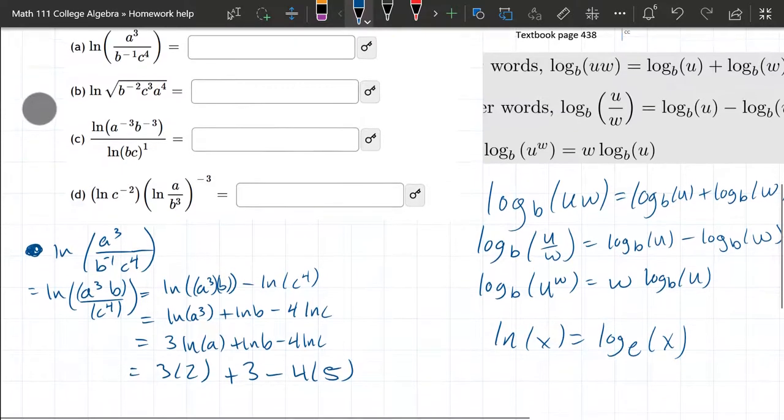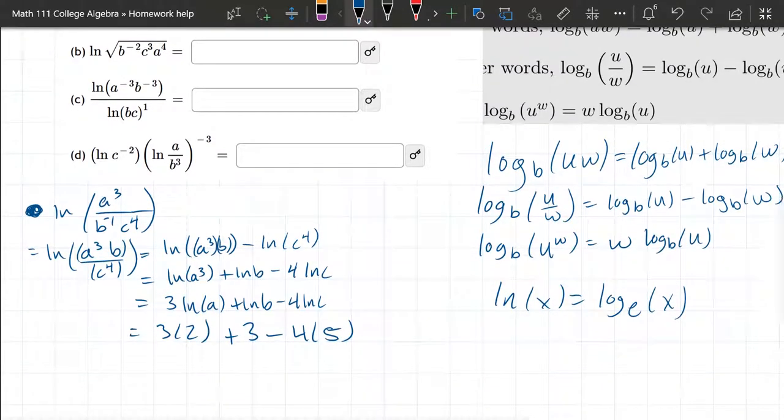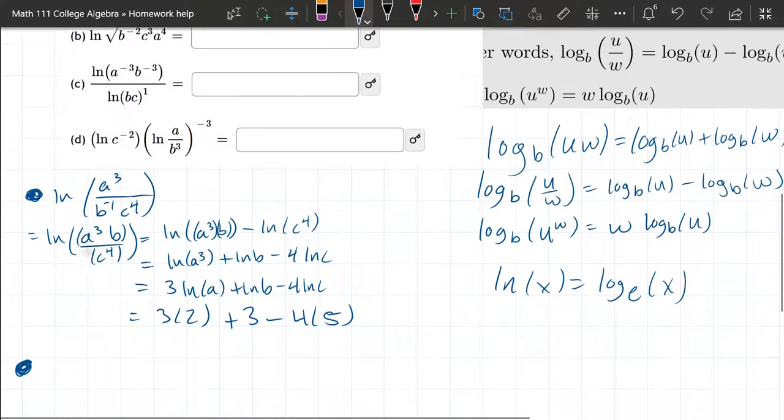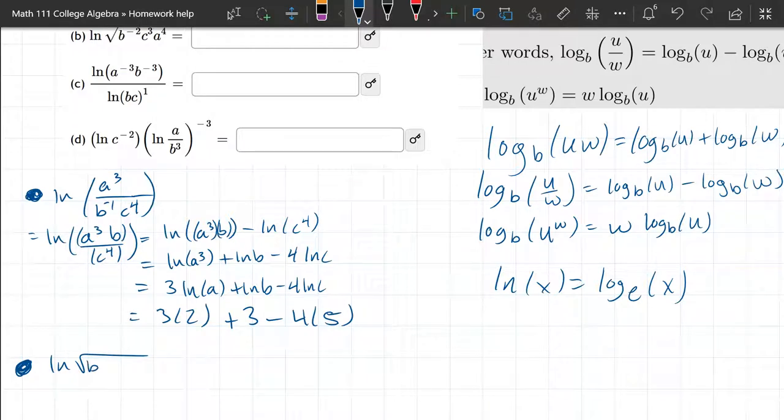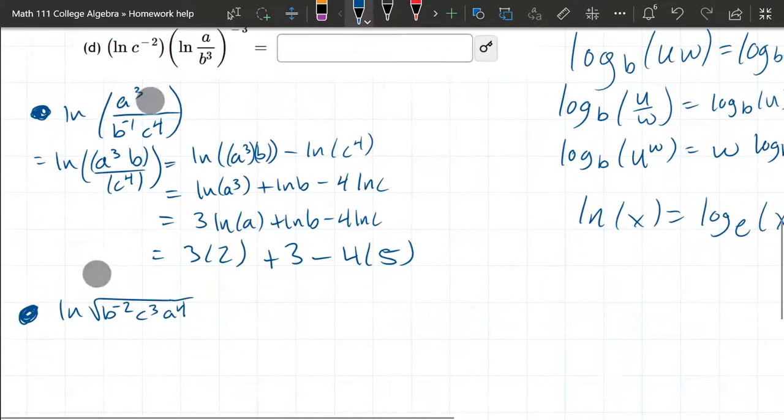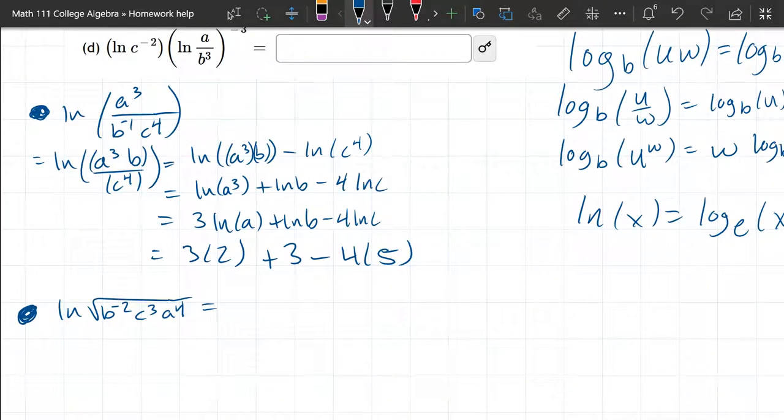So now we're going to move on to part B. I'll just draw another point right here. And this one is ln of square root B to the negative 2, ln C cubed A to the 4th. This one, the outermost operation is not multiplication. It's going to be a square root.